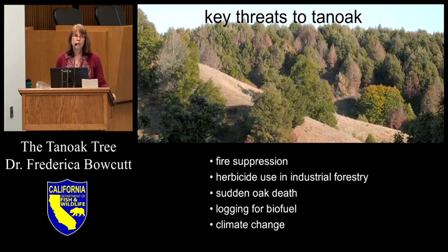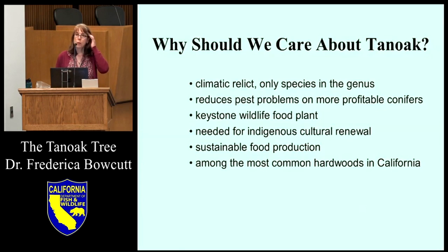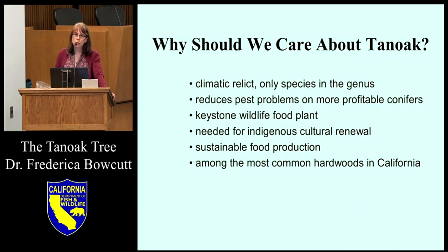There are a number of threats that face tan oak. Sudden oak death is not the only one. Fire suppression has a huge impact on the distribution, abundance, and ecology of tan oak in the state. Why should we care? There are many reasons to care for biodiversity, but specifically for tan oak, it's similar to coast redwood — it's a climatic relic, and much of its range overlaps with coast redwood. However, it's a bit more drought tolerant and extends into the Sierra Nevada and the Siskiyou range.